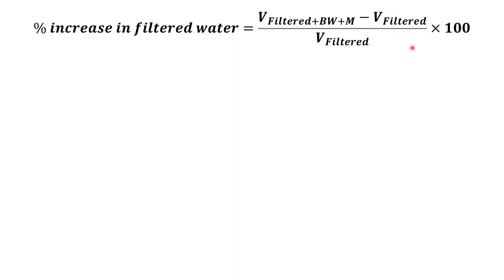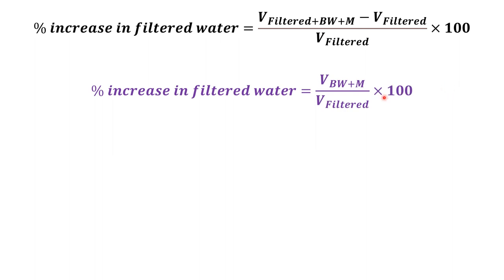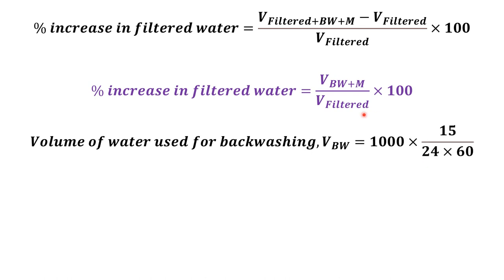The numerator of the percentage increase is volume of backwashed water plus volume of maturation water, upon the volume of filtered water. So we need to find each of these three terms. The volume of filtered water is the initial amount obtained without putting backwashed water and maturation water back into the tank.